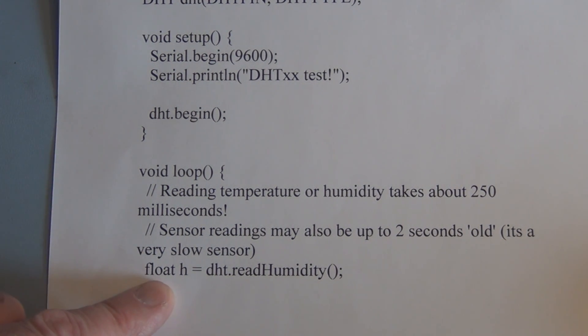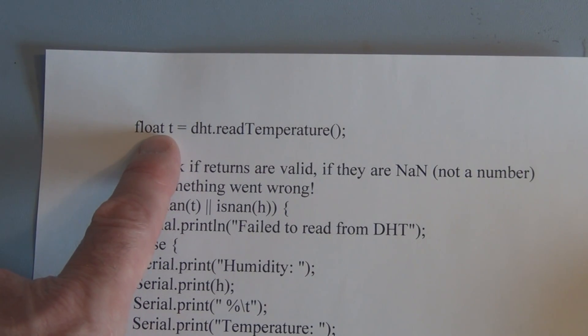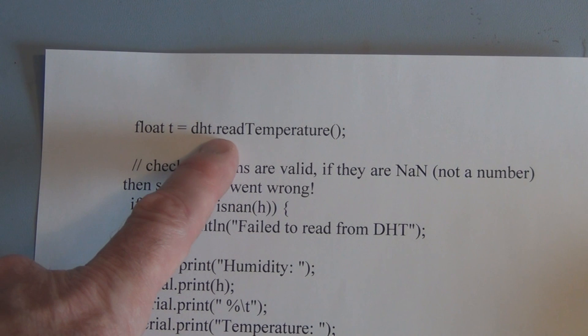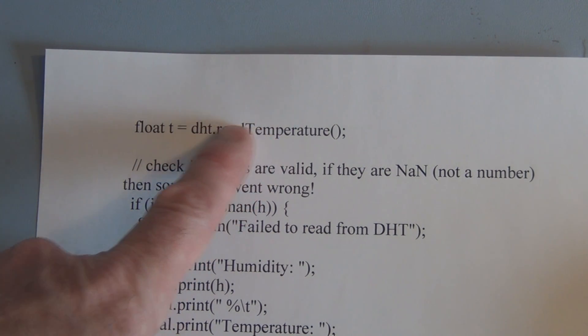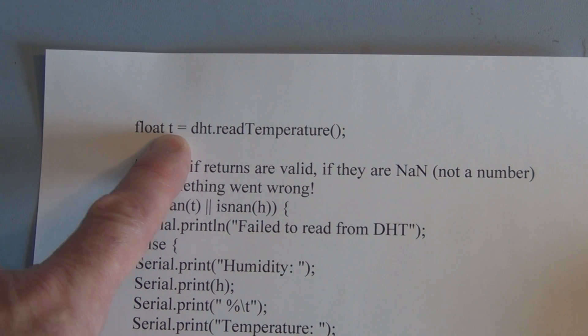Here we have a float, which is a floating point number. So it has a decimal point. And so float H. So DHT dot we're reading the humidity and putting that value into the variable H. So here we're reading the temperature. So DHT dot read temperature. And we're storing that value in the variable T.